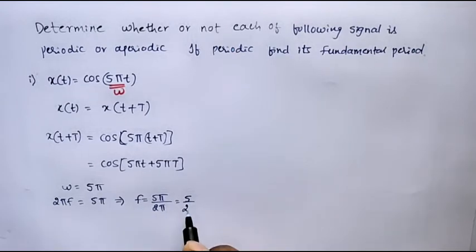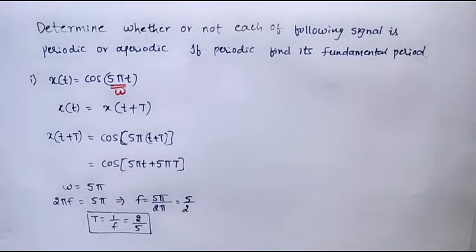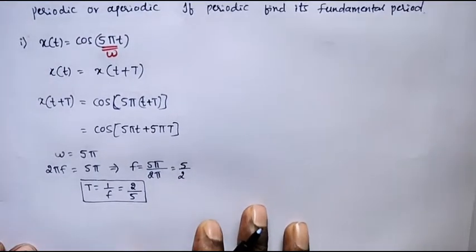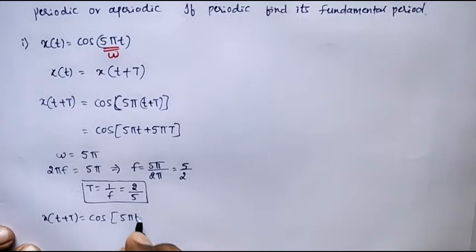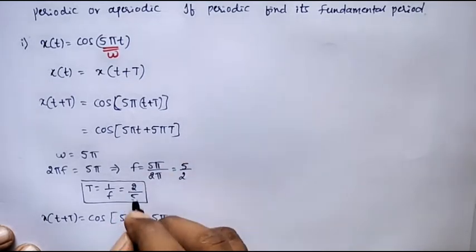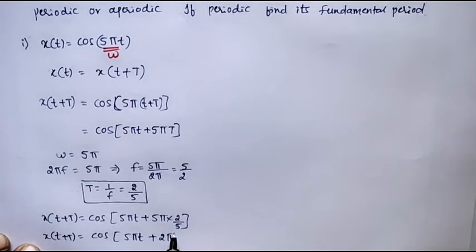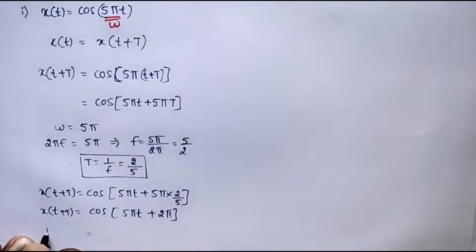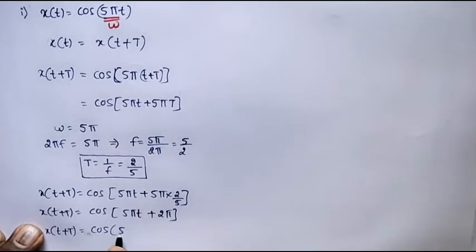This f is the fundamental frequency, that is 1/2. Therefore, T = 1/f = 2 seconds. This T is nothing but the fundamental period. Now I can write x(t + T) = cos(πt + π·2) = cos(πt + 2π). We know that cos(θ + 2π) = cos(θ).